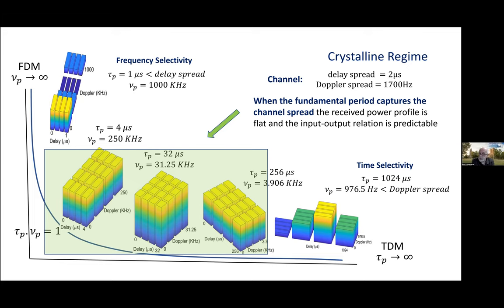But the important thing is that there's a sweet spot in the middle of the hyperbola where the fundamental period captures the channel spread. There's no fading. The received power profile is flat, like the surface of a crystalline solid. And we call this the crystalline regime. So, to summarize, there's no fading and the input-output relation is predictable.